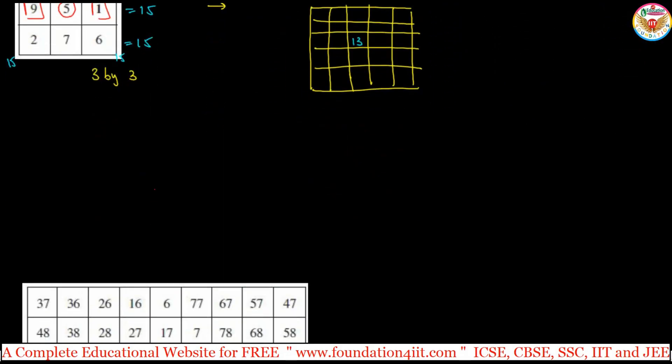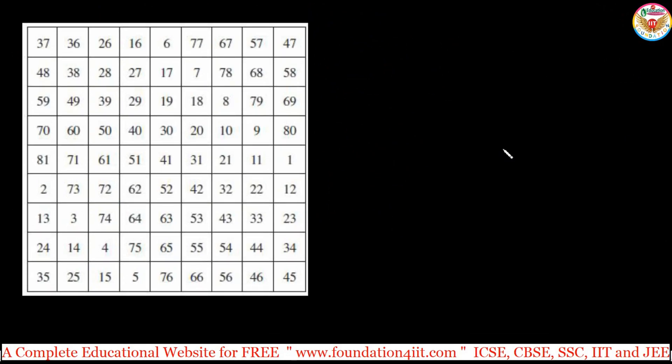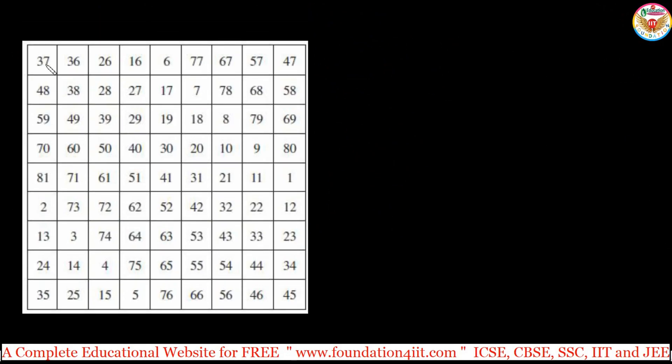One example I will show. Here is the table. This is actually 1, 2, 3, 4, 5, 6, 7, 8, 9. 9 by 9, 9 rows, 9 columns. 9 into 9 is 81. 81 divided by 2, 40.5. Round off to 41. That 41 is exactly at the center.